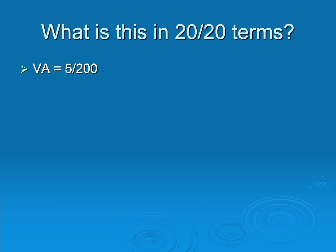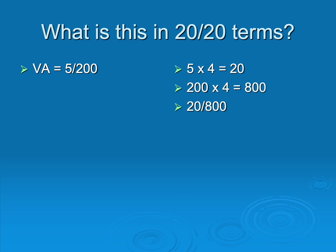When you send patients to low vision you'll see measurements like 5/200. To convert to 20-foot terms, multiply the numerator by 4 to make it 20, then multiply the denominator by 4 as well to keep the same ratio. So 5 times 4 is 20, and 200 times 4 is 800. Therefore 5/200 is the same as 20/800.